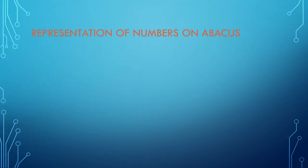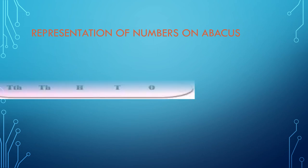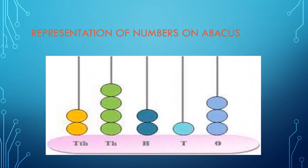Representation of Numbers on Abacus. Children, this is the Abacus and in this, we are going to learn the place values. As you can see here, it is written 1,000, 10,000.